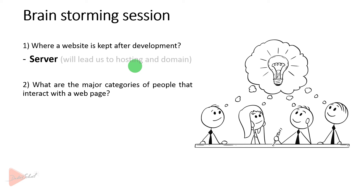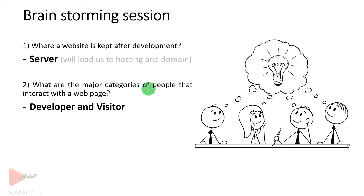The major categories are the developer and the visitor. Whether the website is e-commerce, entertainment, education, or sports-related, those who interact with it form actor groups. The developer is one actor group, and visitors form another actor group.